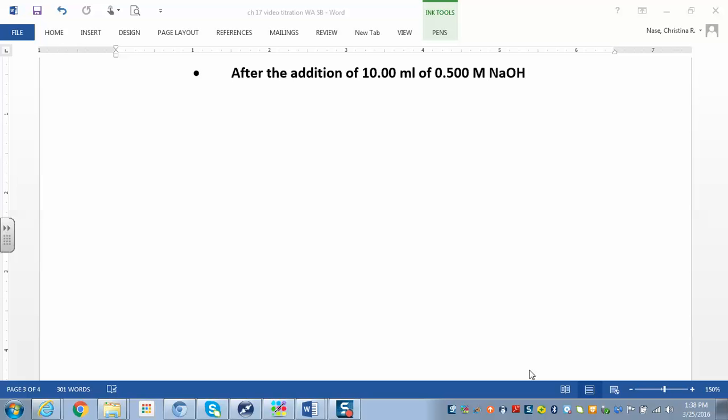Now we're at part C. We're adding 10 mL of 0.5 molar NaOH. We don't know if we've reached the equivalence point yet. Just because it's the third point doesn't necessarily mean we're at the equivalence point.